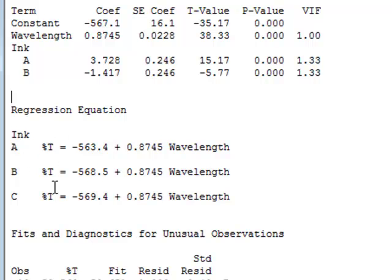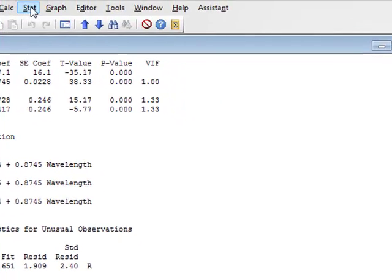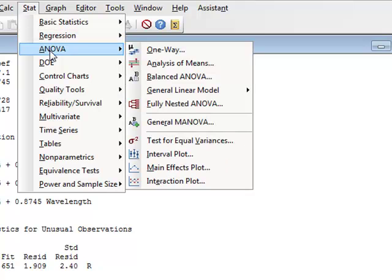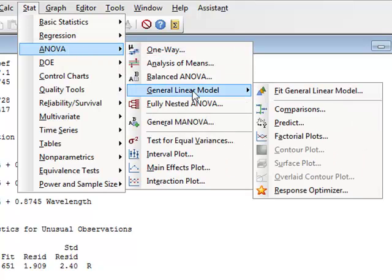In these three regression equations, the percentage transmission varies with wavelength with the same slope in all three cases, but with a different constant value. So there appear to be different constants for the three inks, but we must perform a comparisons test to see which of these differences are significant. We go to STAT > ANOVA > General Linear Model and select the comparisons option.